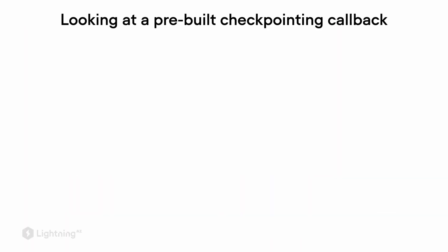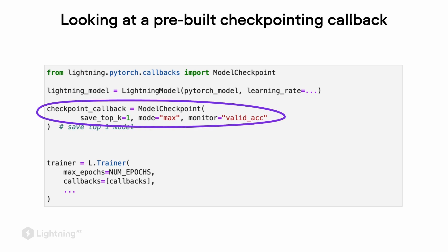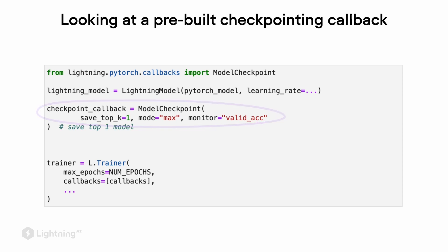Let's start with a pre-built callback based on checkpointing. We can define this model checkpointing callback here, which monitors the validation set accuracy. It will save the model with a maximum validation set accuracy so that we can reuse that later, for example when we evaluate our model on the test set or apply the model to new datasets. As you can see here at the bottom, the callbacks directly plug into the Lightning Trainer.